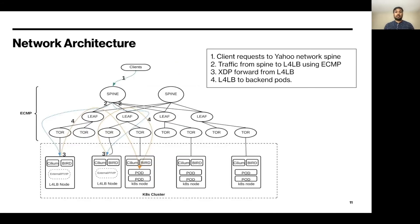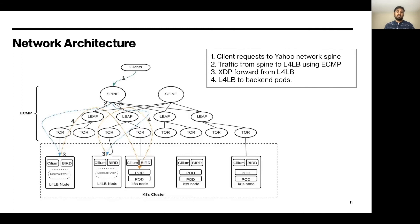This diagram represents our data center network topology. The server and the rack are connected to the TOR, the TORs are connected to the leaf, and the leaf is connected to the spine. We run a spine-leaf architecture in the data center, and all devices are enabled with ECMP. ECMP helps to load balance the incoming traffic across multiple load balancer nodes. Traffic from the internet enters the data center through the spine, and the spine does ECMP to send traffic to the L4LB node. The L4LB node with XDP redirects the packets to the corresponding pod, and the pod gives the response back directly to the client.